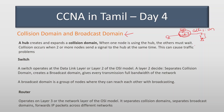In this case, we have multiple hubs. When you have multiple hubs, the collision domain will expand. Why? Because when one device starts a transmission, all others must wait. This results in multiple collision operations across the network.